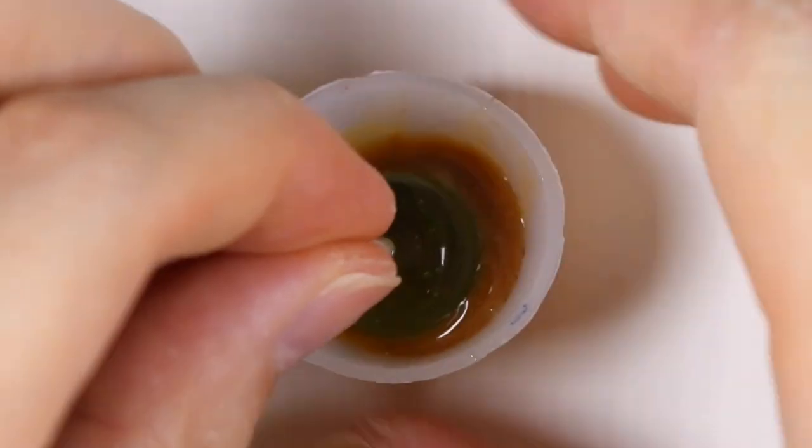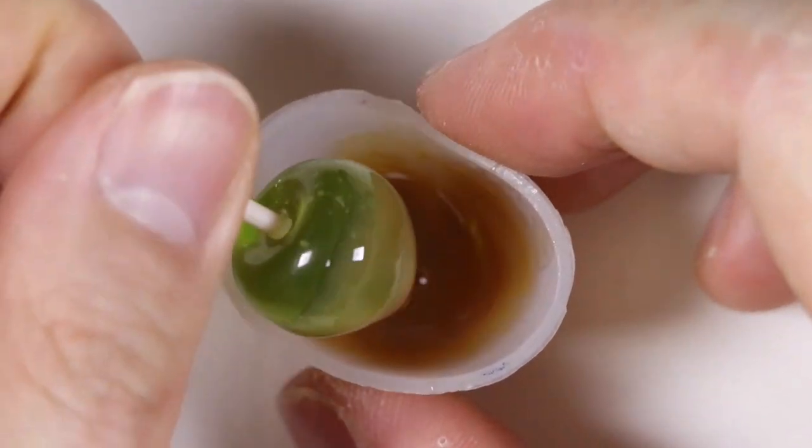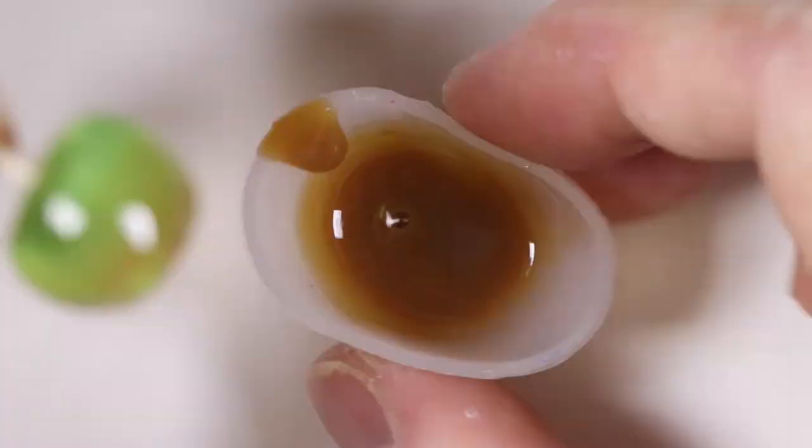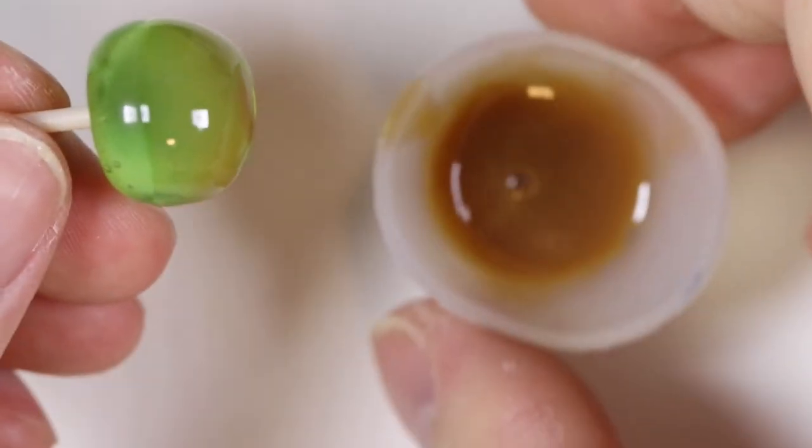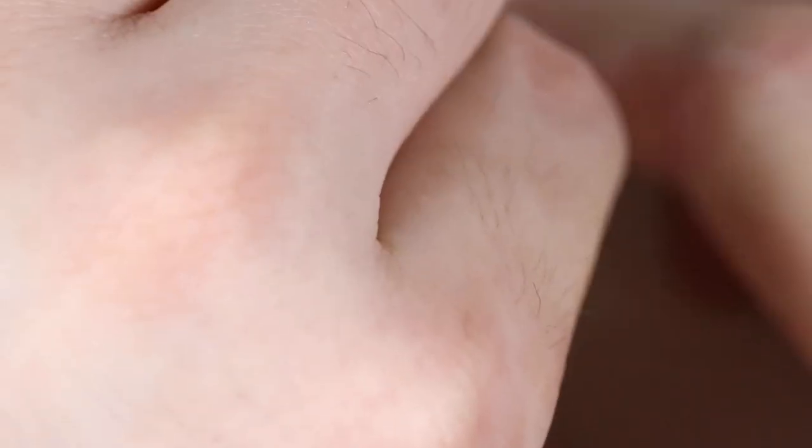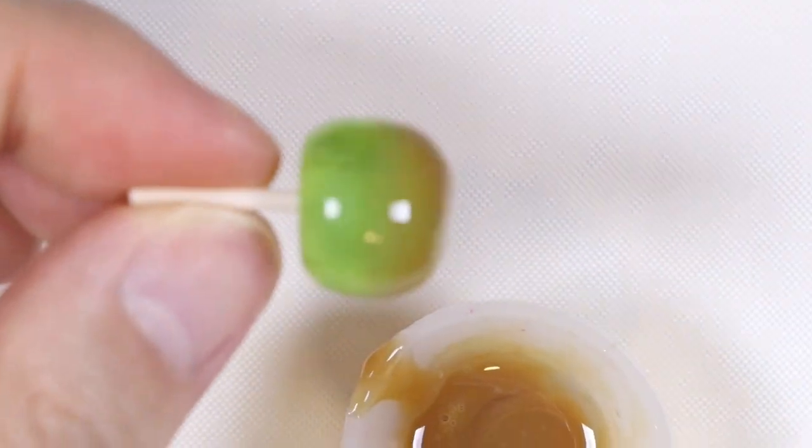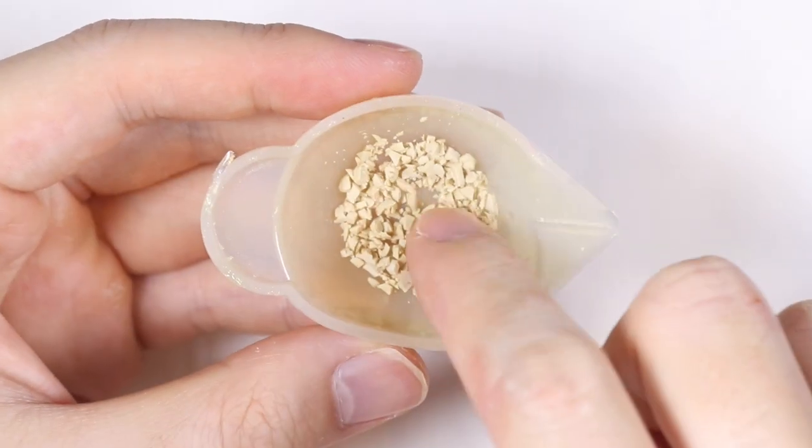So once we have our caramel color, we're going to dip our apple in there. Just one little layer and then let that cure under the UV lamp. And then we're going to dip it a second time in there. But instead of curing it right away, we're going to cover it with some of our little peanut crumbles that we had.